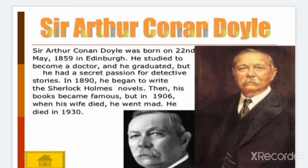The author is Arthur Conan Doyle. He was born on 22nd May 1859 and he studied to become a doctor and he graduated. But he had a secret passion for detective stories. So in 1890, he began to write the Sherlock Holmes novels, which hope all of you must have heard about. His books became famous, but in 1906, when his wife died, he went mad and he died in 1930.